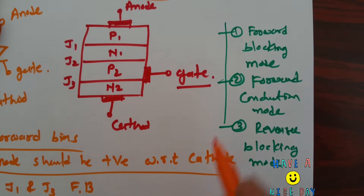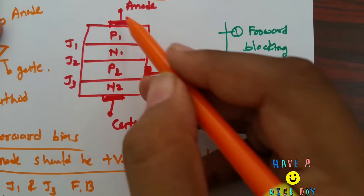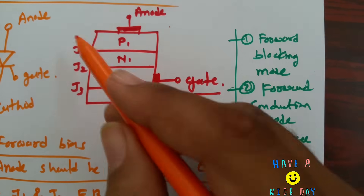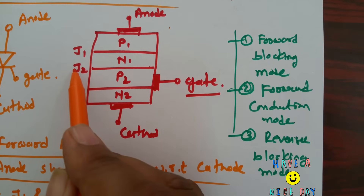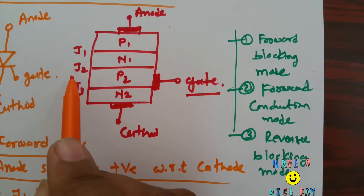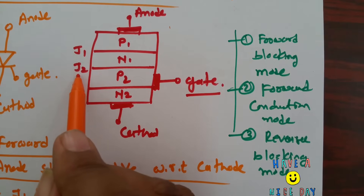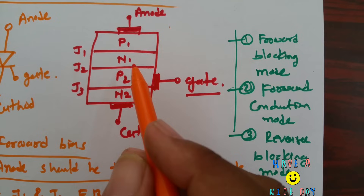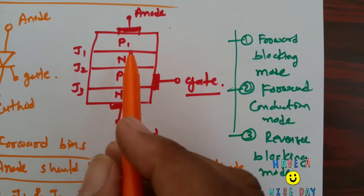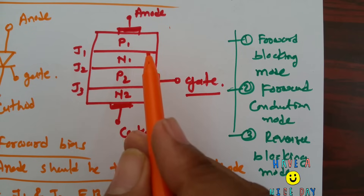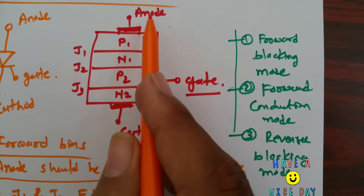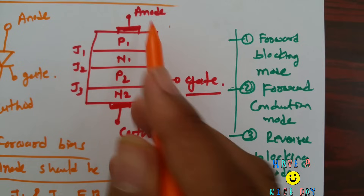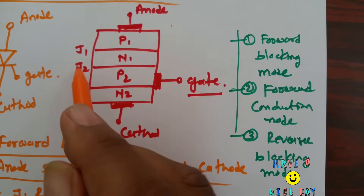In forward blocking mode, when SCR is in forward bias, anode is positive with respect to cathode, so J1 and J3 are in forward bias and J2 is in reverse bias. Because J2 is in reverse bias, current is in the range of micro-amperes flowing through anode to cathode, due to minority carriers present in P-type and N-type material. This is forward blocking mode where current is blocked due to J2 being in reverse bias.